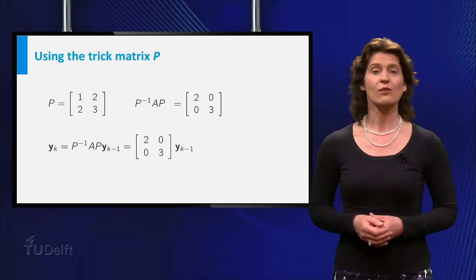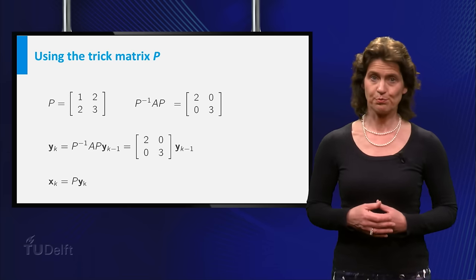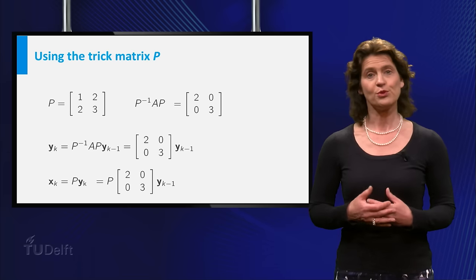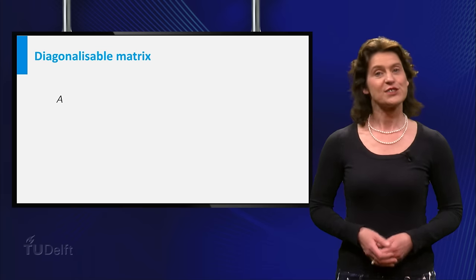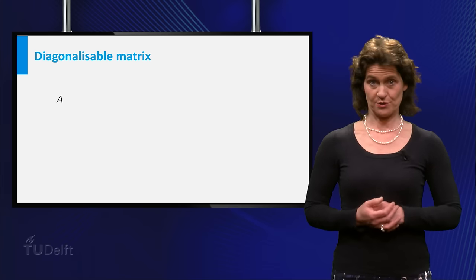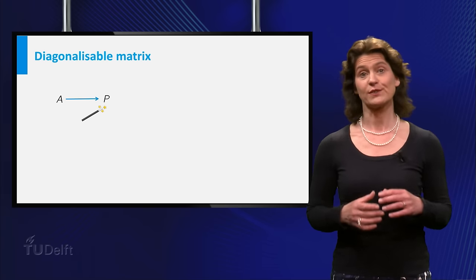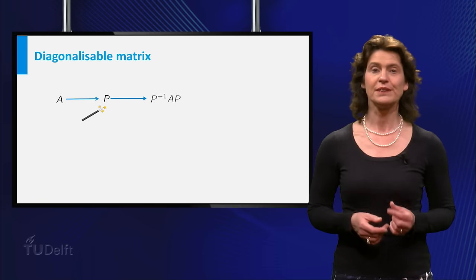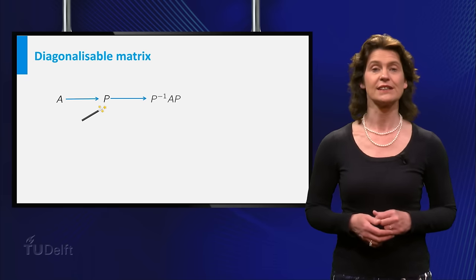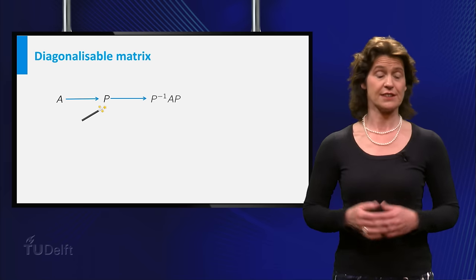So we found yk now, and because xk is equal to P yk, you can compute xk from this. Does it feel like I have cheated on you by coming up with this magical matrix P? Is it always possible to find such a matrix P that does the trick? Let's first explain what the trick was. You started with the matrix A, then you came up with the matrix P, and it turned out that P inverse AP is the diagonal matrix, which made things a lot easier.